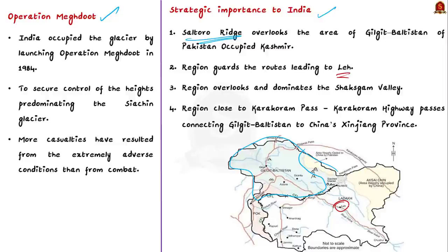Thirdly, the region overlooks and dominates the Shaksgam Valley, which was illegally ceded to China by Pakistan. Fourthly, the region is close to the Karakoram Pass, through which the Karakoram Highway passes. This highway connects Gilgit-Baltistan to the Xinjiang province of China, and it also makes it easier for Pakistan to team up with China. That is why this region is particularly strategically important for India.